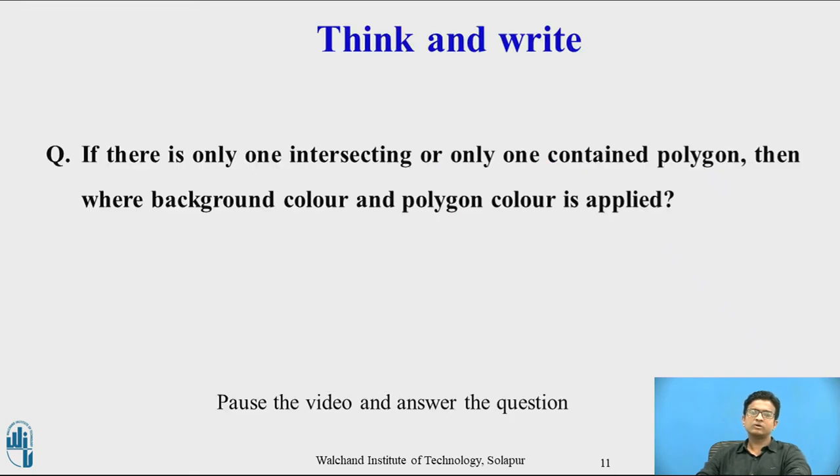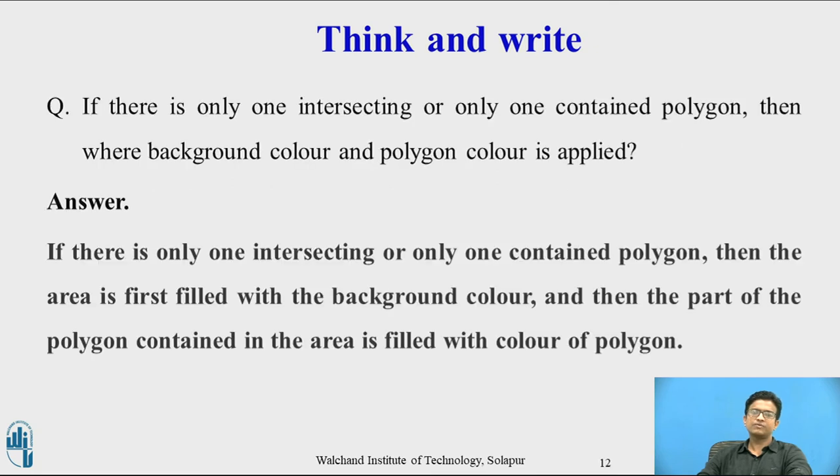Here you can pause the video and answer the question. If there is only one intersecting or only one content polygon, then where are background color and polygon color applied? The answer is that if there is only one intersecting or only one content polygon, then the area is first filled with the background color, then the part of the polygon contained in that area is filled with the color of the polygon.